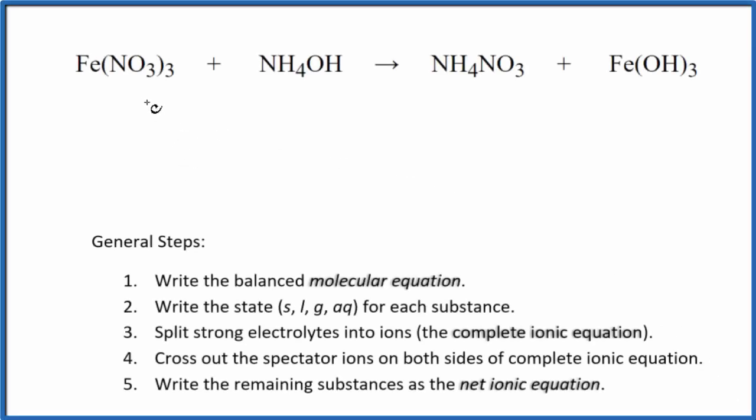In this video, we'll write the balanced net ionic equation for Fe(NO3)3 plus NH4OH. This is iron 3 nitrate plus ammonium hydroxide. The first thing we need to do is balance the molecular equation.